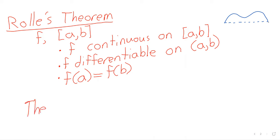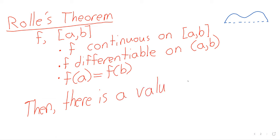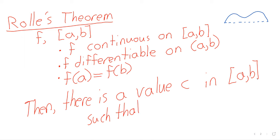The third condition is the real condition — this is the condition that you would not expect most functions to satisfy. F is equal at the end points. So you've got some function that does whatever it's doing, but it begins and ends at the same value. Then, says Rolle's Theorem, there is a value c in this interval such that f prime of c equals zero.